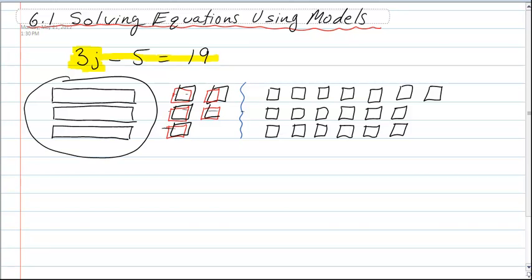Okay, and it's a zero pair, and that makes nothing, right? But because I've done that here, then I have to add five positives over to this side, so I'm gonna go one, two, three, four, five, all right.